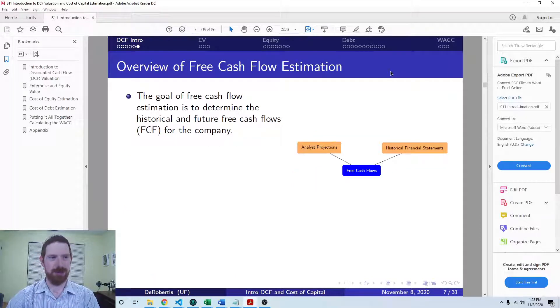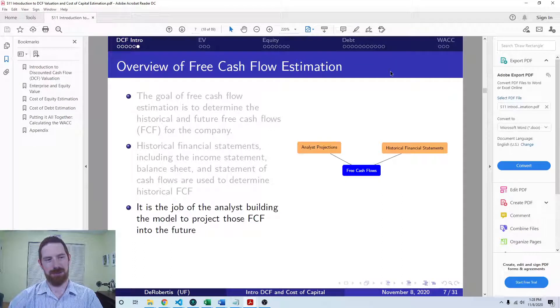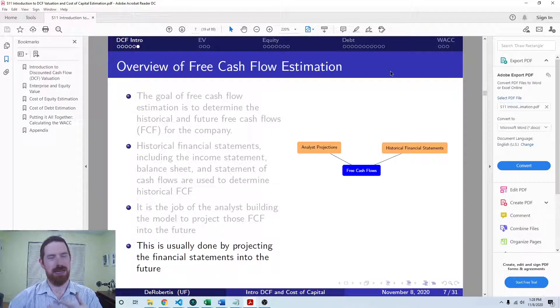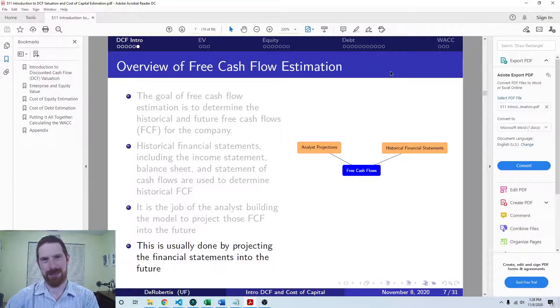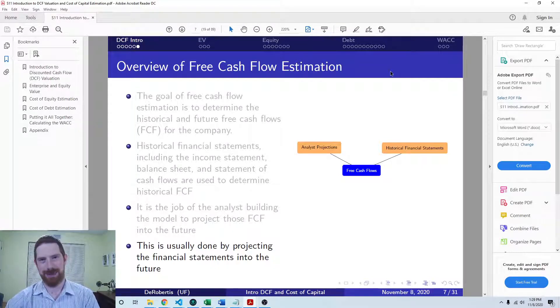And getting into free cash flow estimation. So there, we have to start by looking at historicals, calculating historical free cash flows. And then we go to project the future cash flows, which is typically done by projecting the financial statements themselves into the future, and then calculating the free cash flows from those projected financials. So that's a quick overview of everything that we're going to be doing in the DCF model.